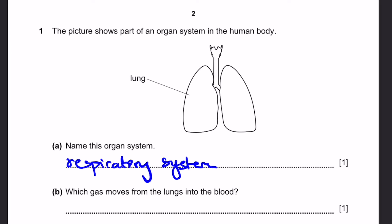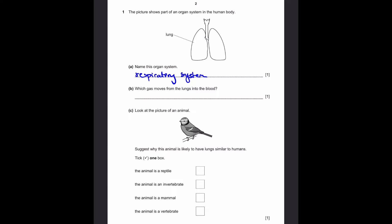Part B: Which gas moves from the lungs into the blood? Well, the gas which moves from the lungs to the blood is the one which is used by the body. What is used by the body? Of course, oxygen. So that'll be our answer.